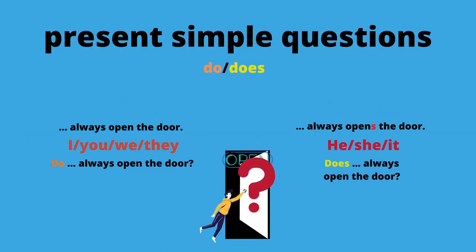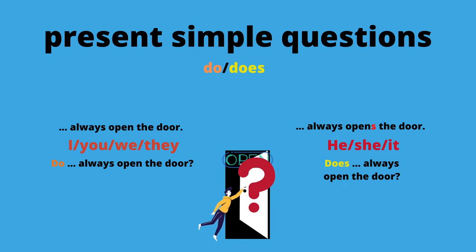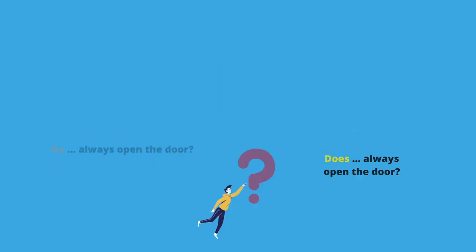As we're already in the flow, let's also discuss questions in the present tense simple. What do we ask if we don't know whether he always opens the door? The 'do' or 'does' moves to the front of the sentence to indicate the question. 'He always opens the door' becomes 'Does he always open the door?' Now, there are three verbs that need special care.